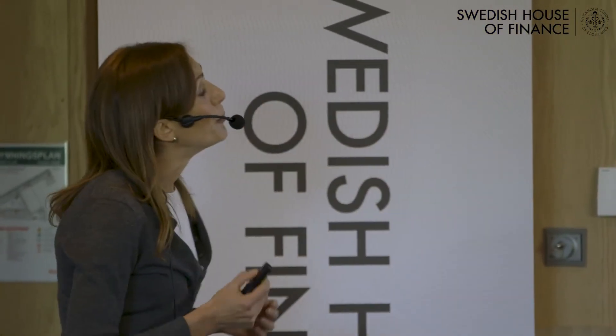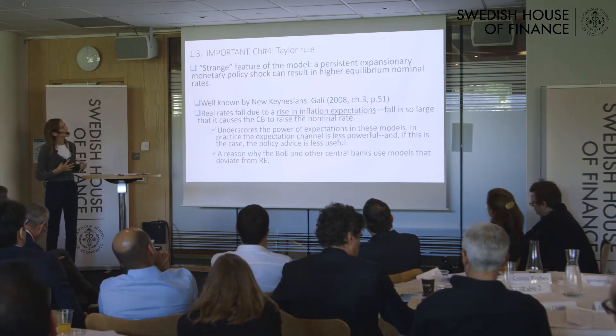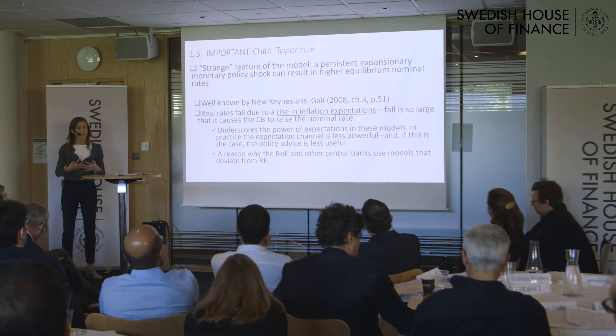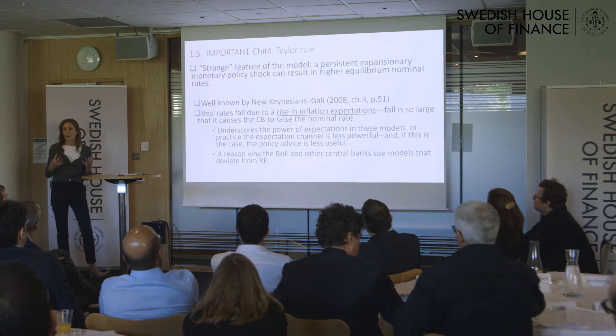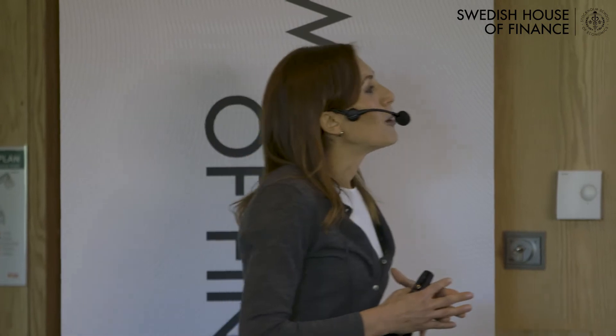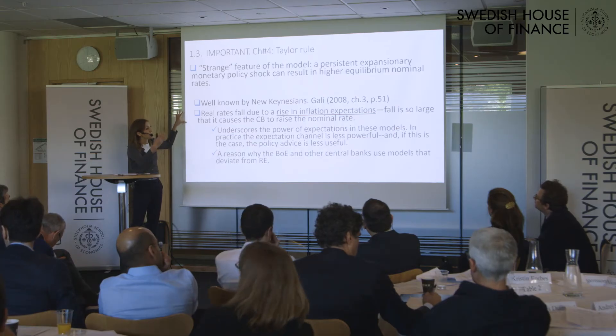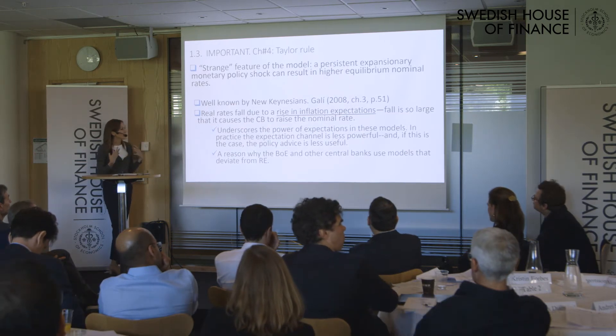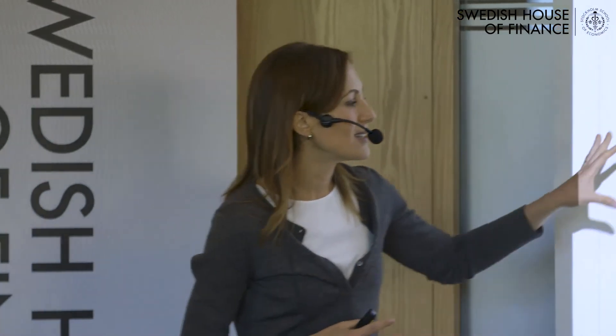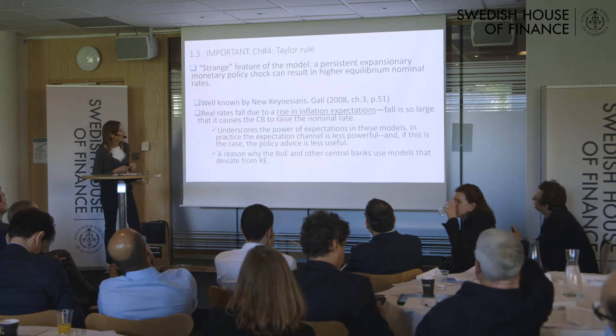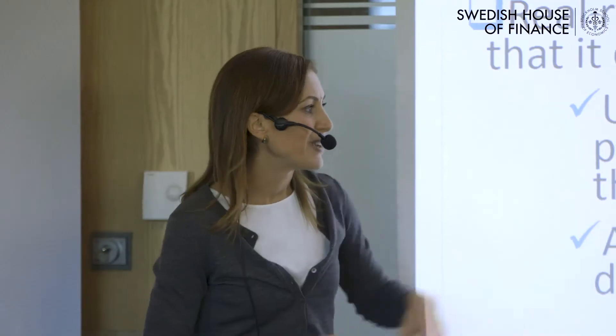Regarding the Taylor rule issue, Harald points to a strange feature of the model: a persistent expansionary monetary policy shock can result in higher nominal rates. I think it's less strange if you plot the behavior of the real rate, which is falling persistently in his example. This fall in the real rate — which is all that matters in these models — is increasing because of the rise in inflation expectations triggered by the shock. This underscores the power of expectations in this class of models. In practice, however, this expectation channel is much weaker, which is why central bankers like the Bank of England use a model that deviates from rational expectations — a way to downweight the future and make the model more realistic and better at fitting the data.